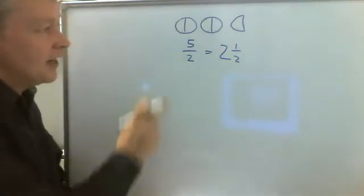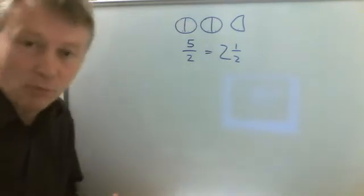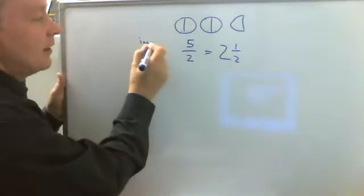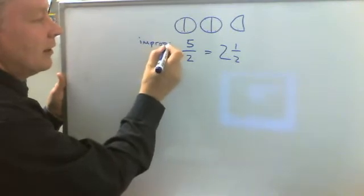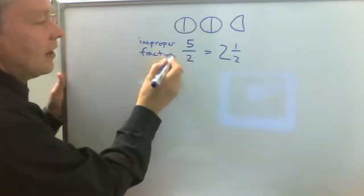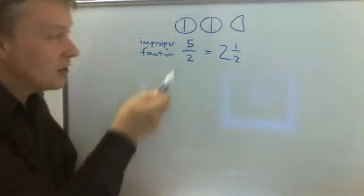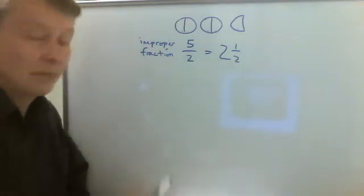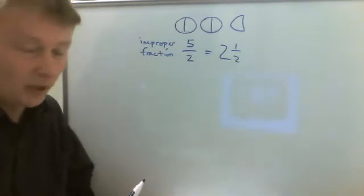What we normally say is that this is what they call an improper fraction. Well what we mean is that the top number which is called the numerator is top heavy and the bottom number is smaller.